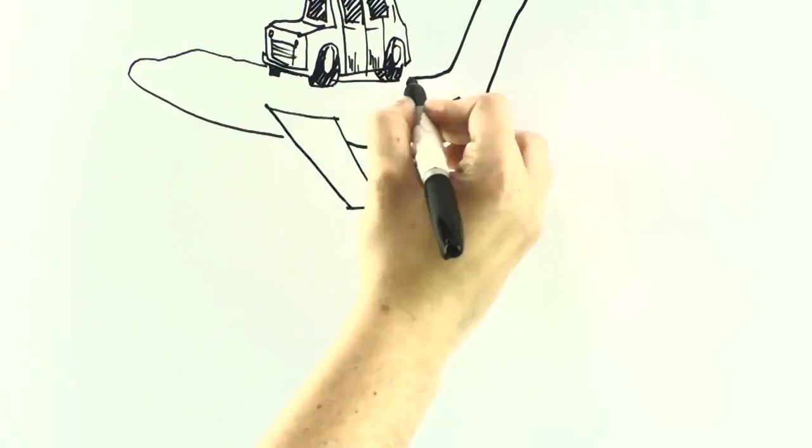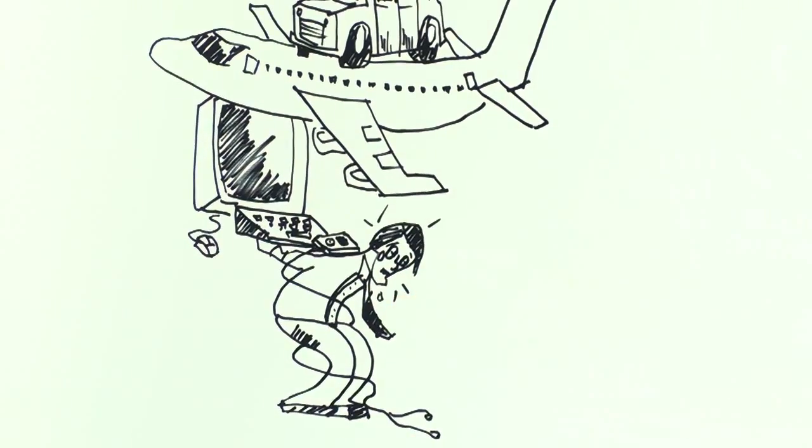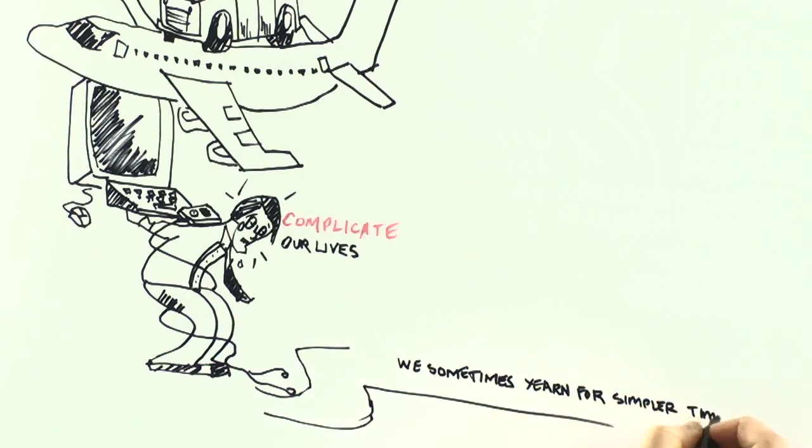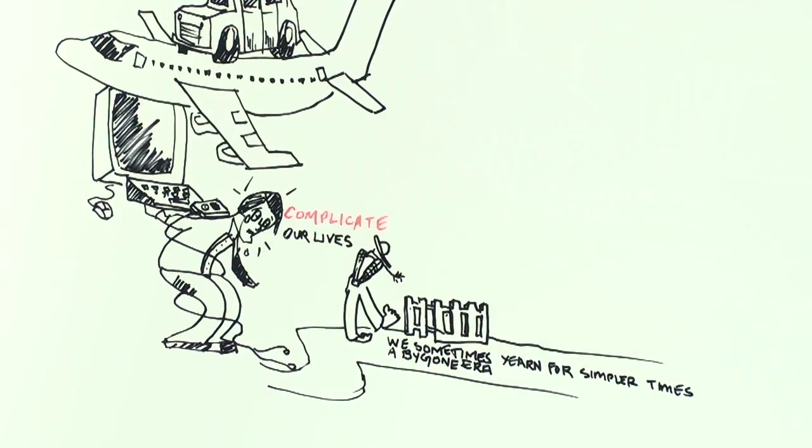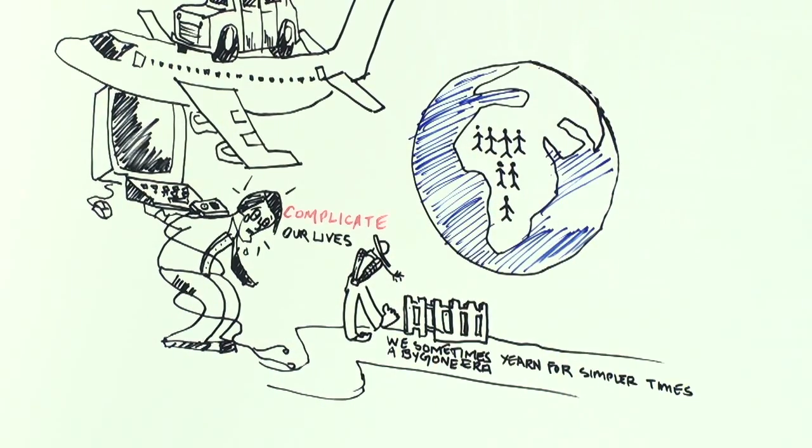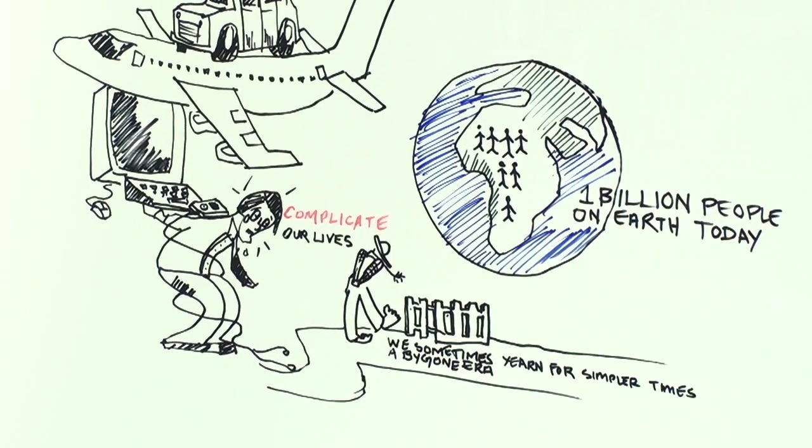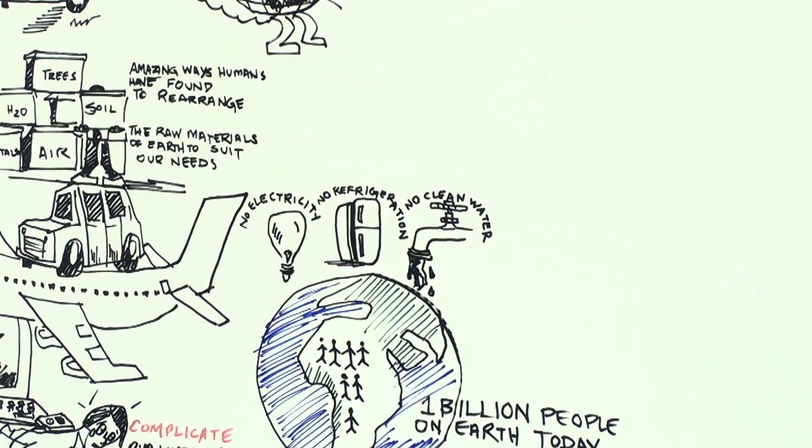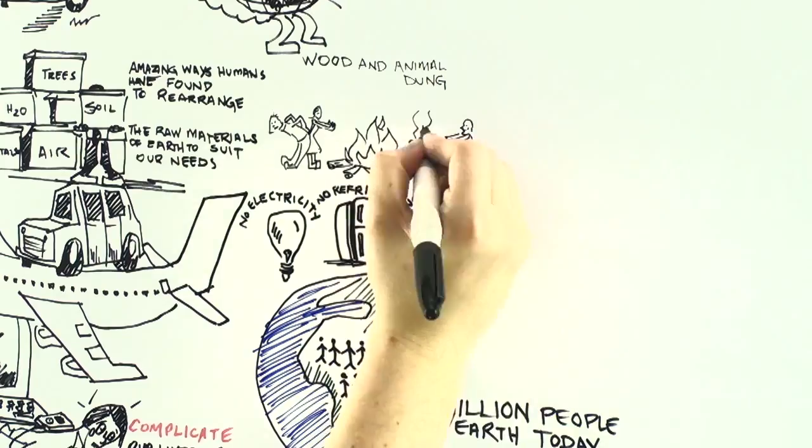Our cars and planes and machines and gadgets and conveniences are all very nice, but they also complicate our lives. We sometimes yearn for simpler times, a bygone era when life was less hurried. Yet that way of life has not been relegated to the dustbin of history. It is still lived by more than one billion people on the Earth today who have no electricity, no refrigeration, no clean water, and who must gather wood and animal dung to use for heating and cooking.